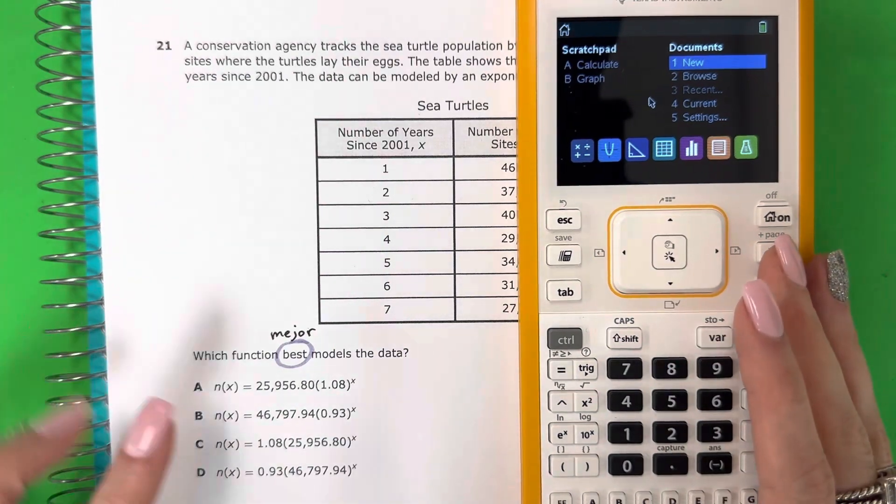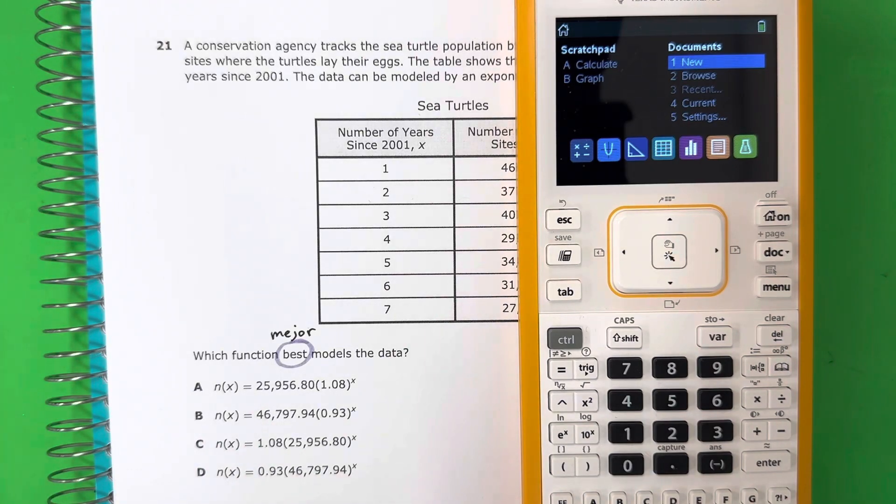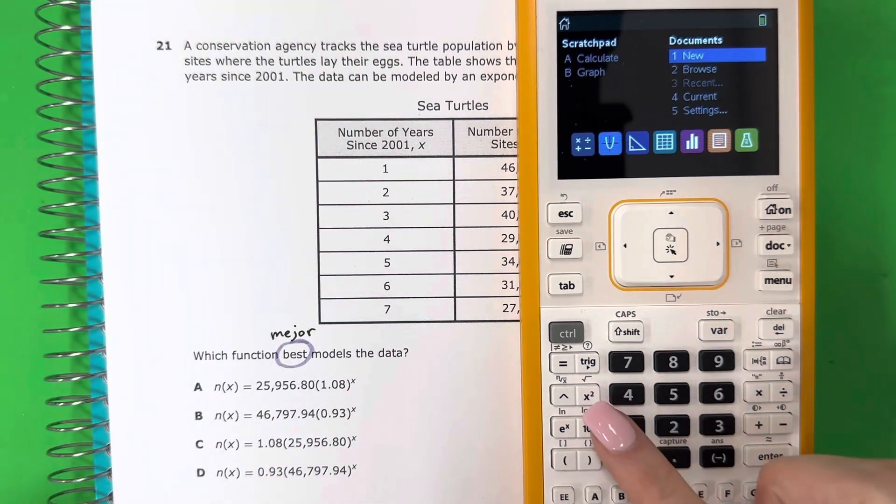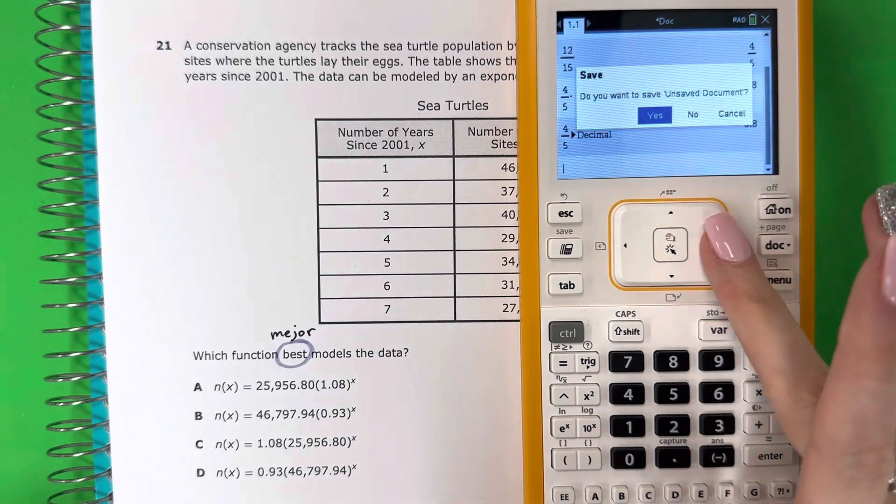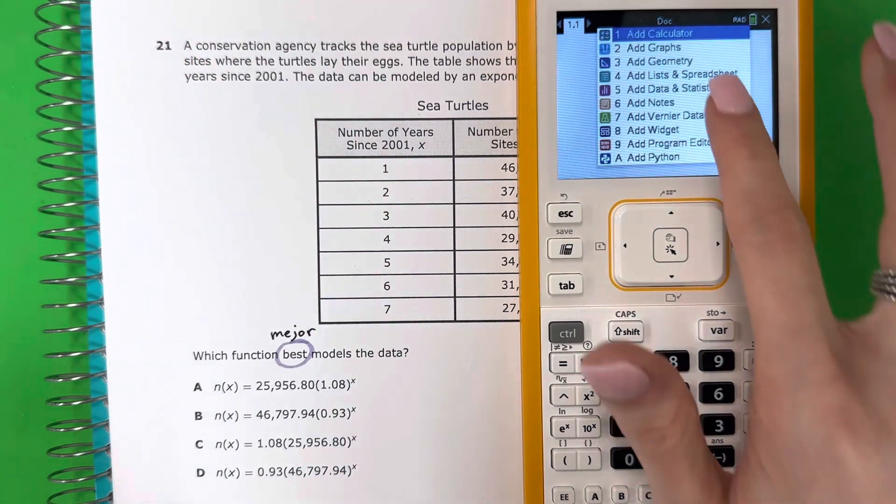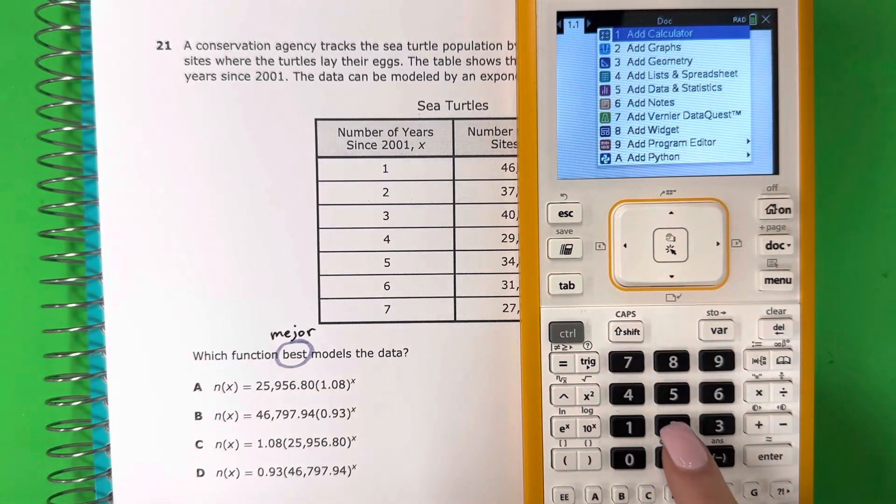So we are going to go ahead and do these one by one. Vamos a ponerlos uno por uno. And we are going to see which one is the best. Y vamos a ver cuál es la mejor. Let's go ahead and enter in the calculator. And we are going to go to the graph. Vamos a ir a la gráfica to create a table para crear una tabla. So, that is number two, número dos.